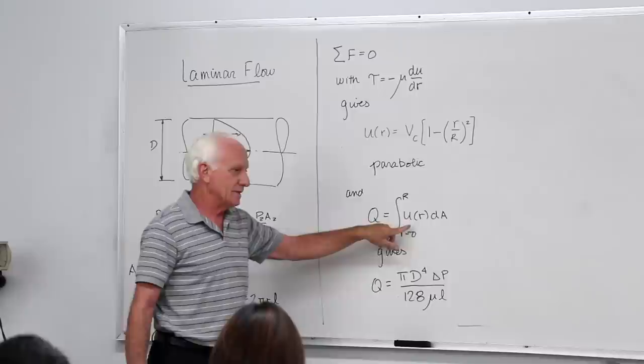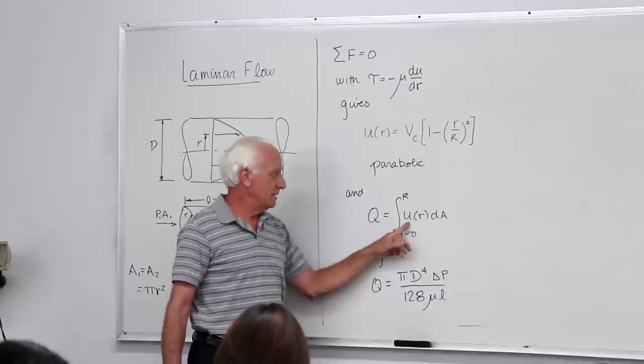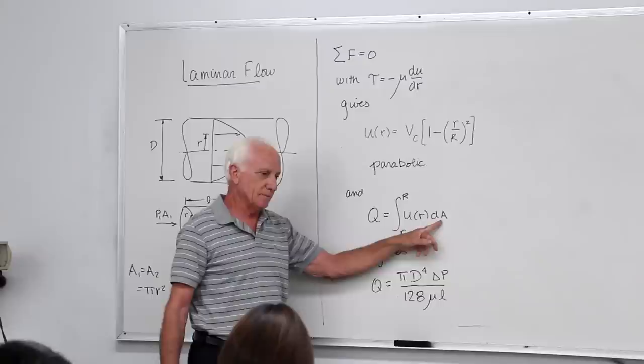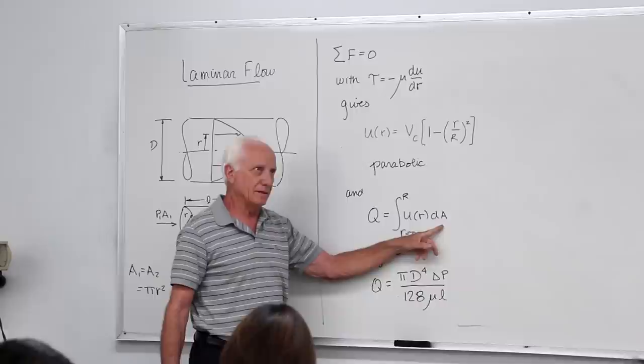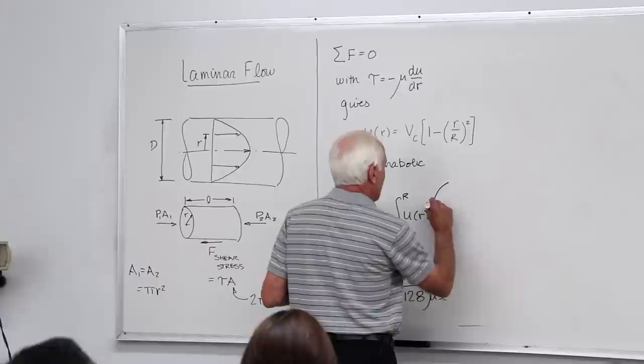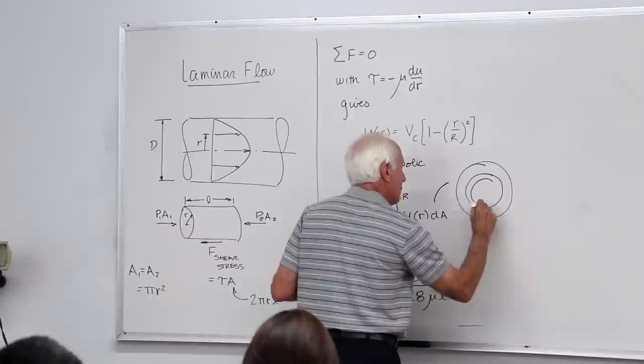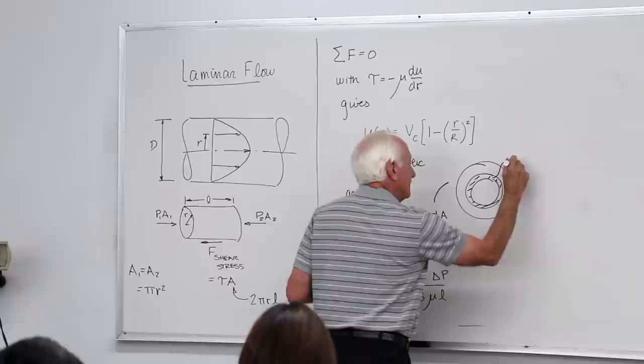The next step we did last time was to get the flow rate Q. We integrate over the velocity U times the differential area. We talked about that last time. Then it was pi DL. We had the differential area.